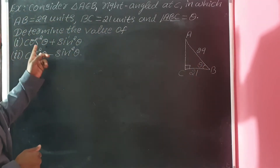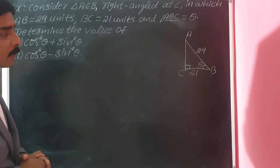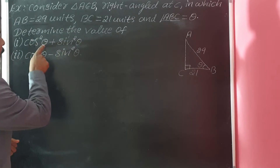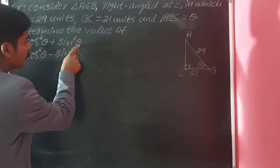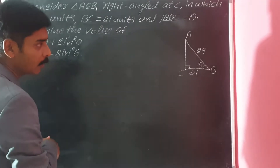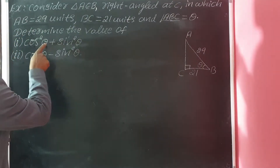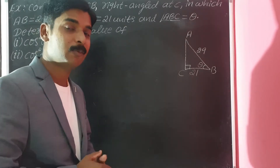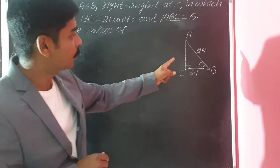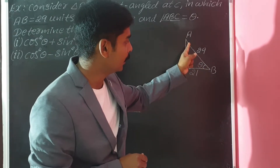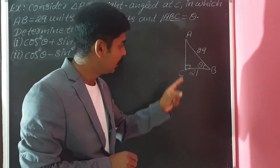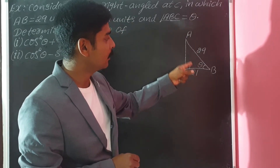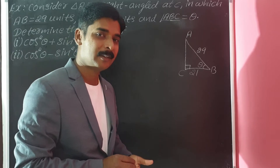With respect to angle theta, we must find the values of cos theta and sin theta. To do that, we need all three sides of the right-angled triangle. Out of the three sides, two sides are given — so we need to find the third side. We will find it using the Pythagoras theorem.